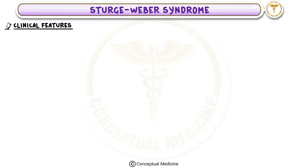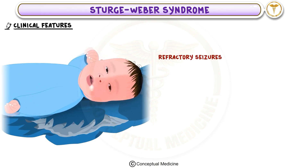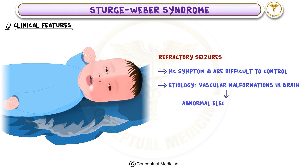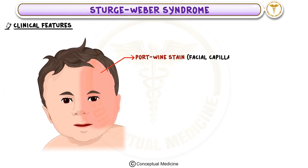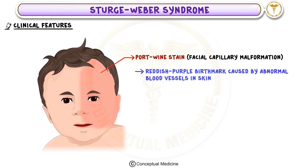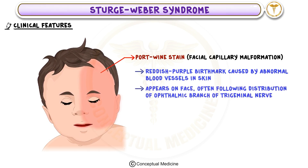Clinical Feature 1: Refractory Seizures. One of the most common symptoms is seizures that are difficult to control. These occur due to vascular malformations in the brain, leading to abnormal electrical activity. Clinical Feature 2: Port-wine Stain (Facial Capillary Malformation). Another key feature is a port-wine stain — a reddish-purple birthmark caused by abnormal blood vessels in the skin. This stain typically appears on the face, often following the distribution of the ophthalmic branch of the trigeminal nerve.